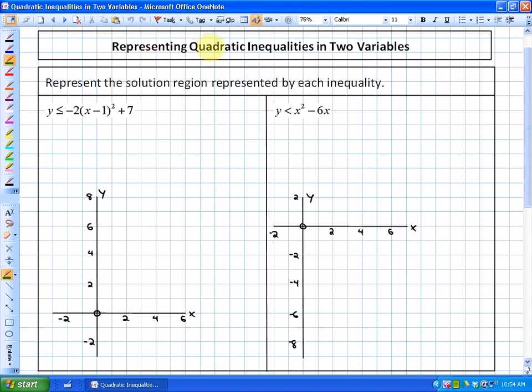In this lesson, we're going to look at representing quadratic inequalities in two variables. In a previous section, 9.1, we looked at representing linear inequalities in two variables. This is very similar, except we are dealing with quadratics. So instead of our boundaries being lines, our boundaries for these inequalities is going to be parabolas.